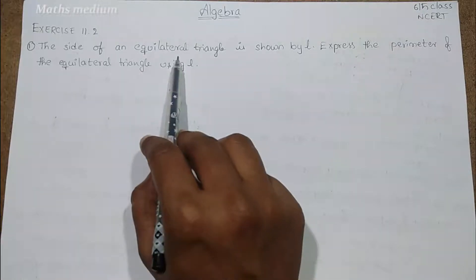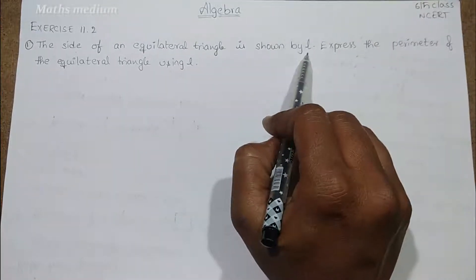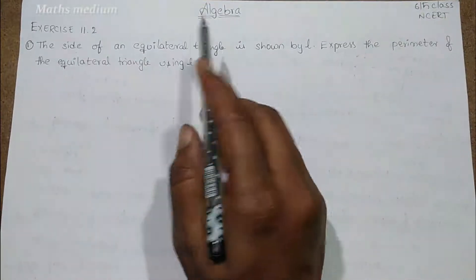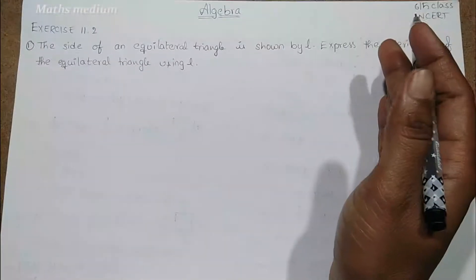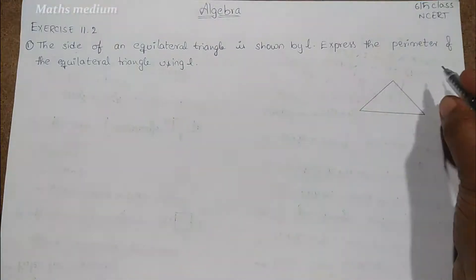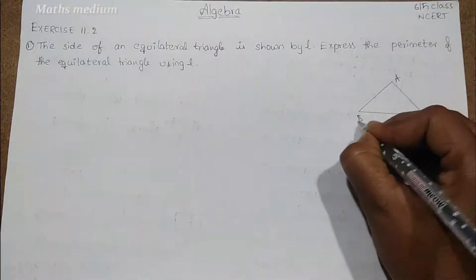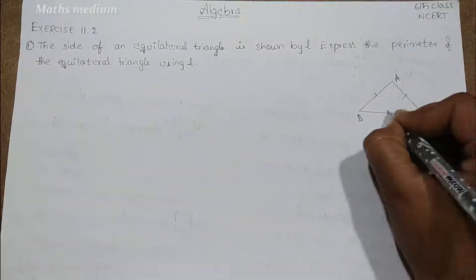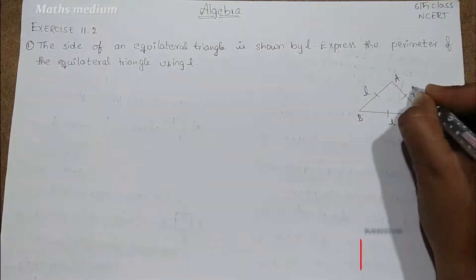In an equilateral triangle, the side is equal to L. We know that an equilateral triangle has all sides equal. So let's take equilateral triangle here. So this is an equilateral triangle ABC. Each side length is equal, that is L.